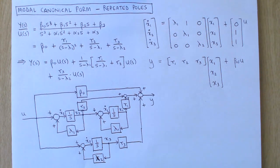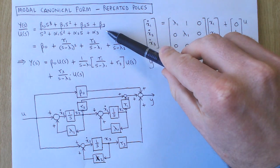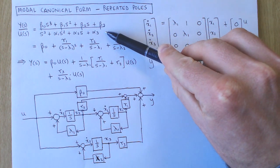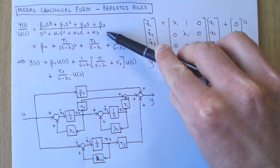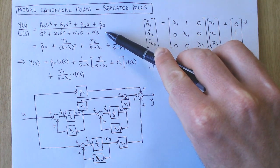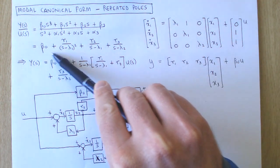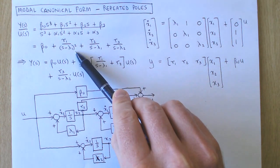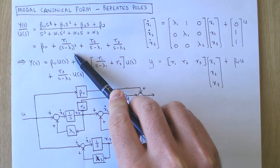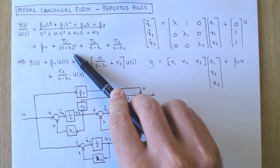Next, let's look at the modal canonical form for a system with repeated real poles. Suppose we have a transfer function of a third-order system, and this system has two repeated poles at lambda 1 and another real pole at lambda 2. We again use partial fraction expansion to write the transfer function as the sum of three transfer functions, but one of these transfer functions is second-order with two poles at lambda 1.